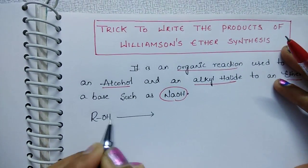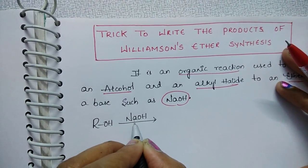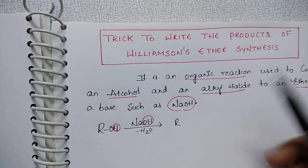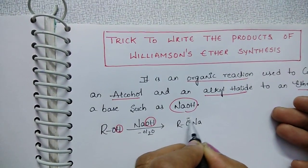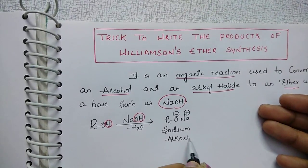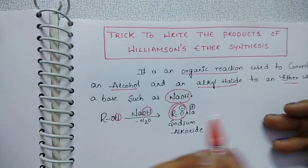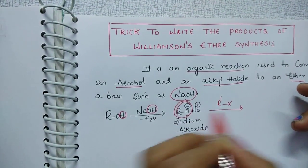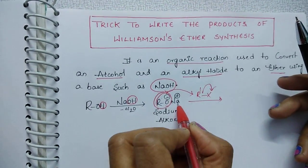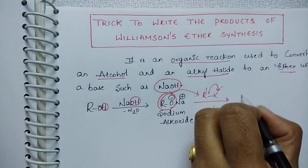When you treat sodium hydroxide with alcohol, the sodium hydroxide abstracts the proton from the alcohol, resulting in the formation of R-O-Na, which is called sodium alkoxide. This alkoxide is a strong nucleophile. When you treat it with an alkyl halide, the alkoxide attacks the alkyl group, the halogen leaves as a leaving group, Na⁺ and X⁻ go as NaX, and we get R-O-R′ — the ether product.